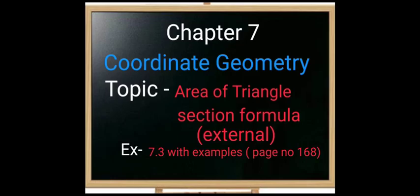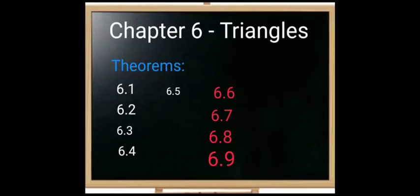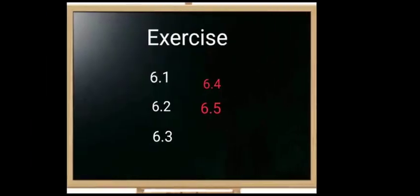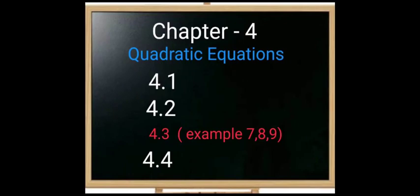Category 3 covers chapters with large reduction. Chapter 6, Triangles, contains theorems 6.1 to 6.9. Theorems marked in white are included in your syllabus; those marked in red are deleted. Theorems 6.1 to 6.5 must be studied, while 6.6 to 6.9 are deleted. For exercises, 6.1, 6.2, and 6.3 are included, while Exercises 6.4 and 6.5 are deleted. Take your textbook and mark the deleted exercises on a blank sheet for reference.